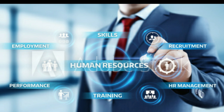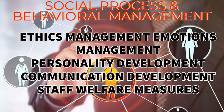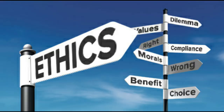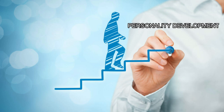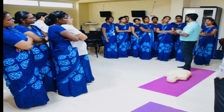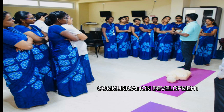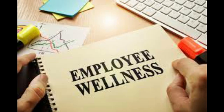The role of HR in Hospital Management also includes Social Process and Behavioral Management, which covers Ethics Management, Emotions Management, Personality Development, Communication Development, and Self-Welfare Measures. Ethics Management is justice for all employees. Emotion Management is the ability to be aware of positive and challenging emotions of employees. Personality Development is the development of the organized pattern of behaviors and attitudes that makes a person distinctive. Communication Development means effective communication increases productivity, which benefits employees and the organization. Self-Welfare Measures is a term including various services, benefits, and facilities offered to the employees by the employers.